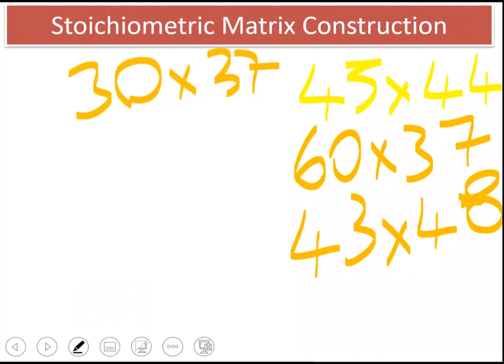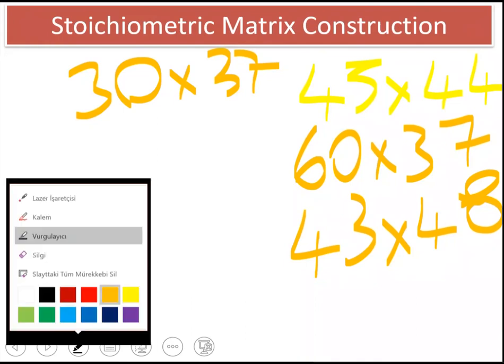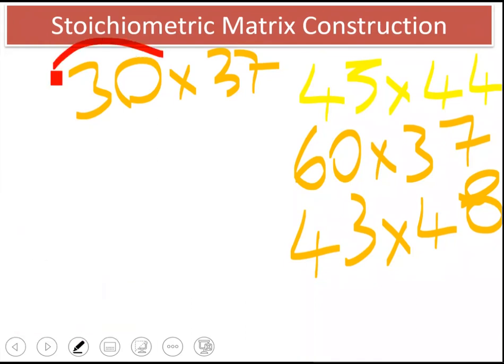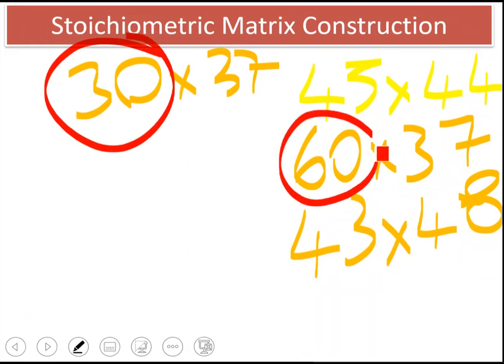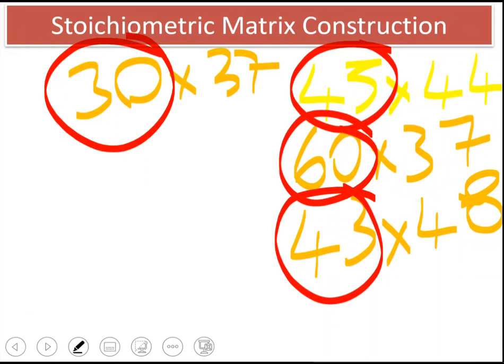And one other group said it is 32 times 37. There is no common results. They all reported very different stoichiometric matrices. They all have different number of mass balances, different number of mass balances around metabolites.